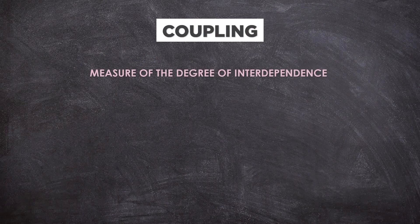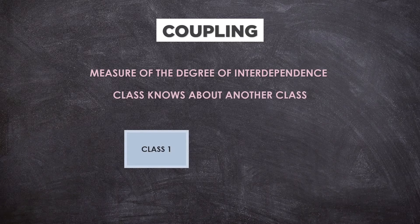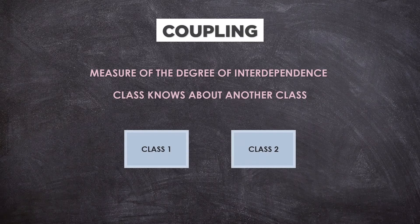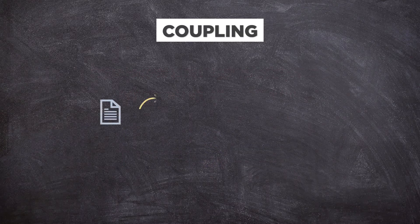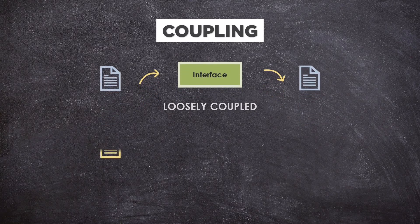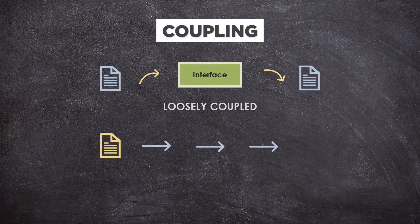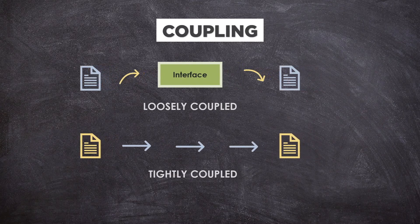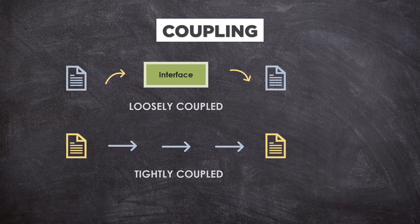Coupling is the measure of the degree of interdependence between modules. In other words, it is the degree to which one class knows about another class. If information is only exposed through interfaces like data hiding, then it is called loosely coupled. If information is more like accessing data members directly, then it is called tightly coupled.